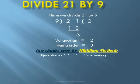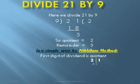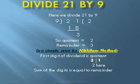In a given two-digit number, the first digit always gives the quotient. So here 2 is the quotient, and the sum of the digits of the dividend gives the remainder — that is, 2 plus 1 equals 3. Is it not a simple way?